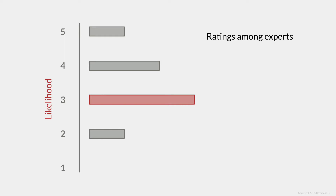For example, if we use the likelihood and consequences matrix and gather input from our experts using that expert domain judgment approach, we might get an analysis that looks like this: a few experts rate the likelihood of a particular issue a 5, some as a 4, and a few as a 2, and the preponderance of expert judgment is a rating of 3. We will need to resolve these expert opinions. There are a variety of ways to do it depending on the quality of their judgment and the factors they considered, which might lead you to adopt techniques such as a structured interview to drive for consensus around a likelihood rating among those experts.